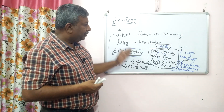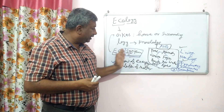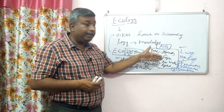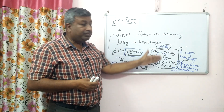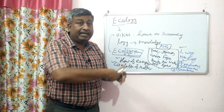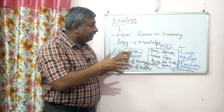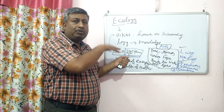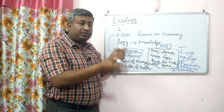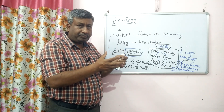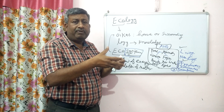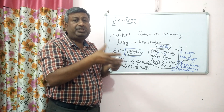So in ecosystem there is a flow of energy, circulation of matter, and there are different trophic levels — they are producers, they are consumers, they are decomposers, and they are interrelated. That is why they make a food web, they make a food chain.